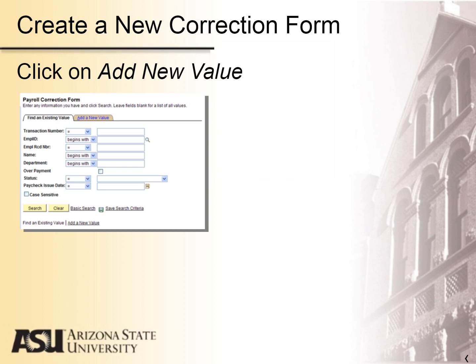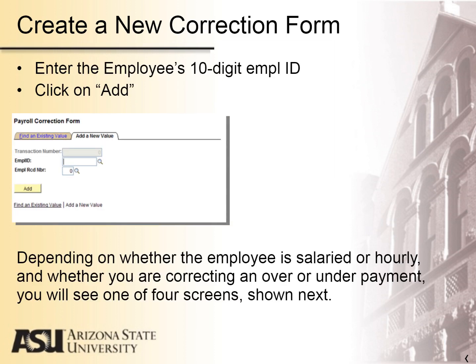To correct an under or overpayment, create a new request by clicking on the Add a New Value tab or the Add a New Value link at the bottom of the page. Enter the employee's 10-digit affiliate ID. If you don't know the ID, use the magnifying glass to look it up. If the employee has more than one concurrent job at ASU within your department, ensure that you have the correct employee record number — it must match the job that has the incorrect payment. When set, click on Add.